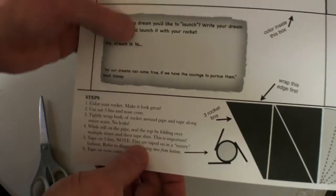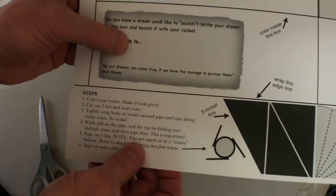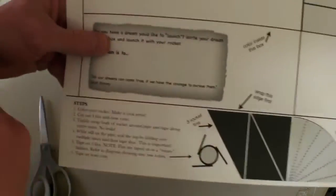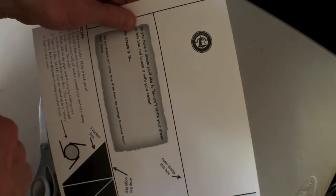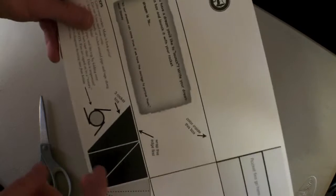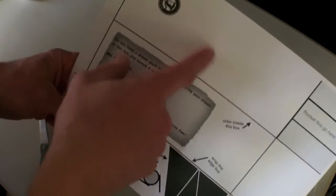This actually won't be seen when they launch the rocket or wrap the rocket around the body. Up here, you can put a logo if you'd like or not. And then in this area, the students can color.